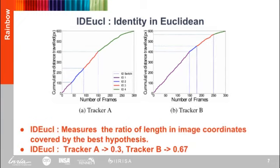As our proposed IDE_UCL measures a tracker based on the distance traveled in the image coordinate space, as shown in the Y axis, it is able to distinguish between the two trackers and reports a score of 0.3 for tracker A and 0.67 for tracker B.